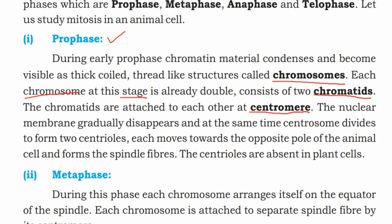The nuclear membrane gradually disappears, and at the same time the centrosome divides to form two centrioles. Each centriole moves toward the opposite pole of the animal cell and forms the spindle fibers. Note that centrioles are absent in plant cells.